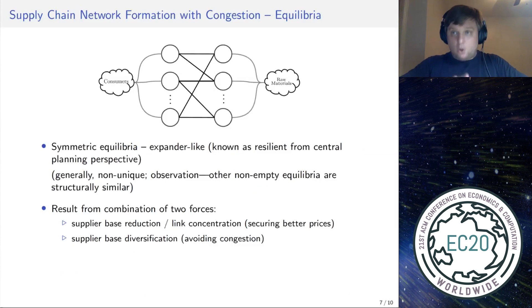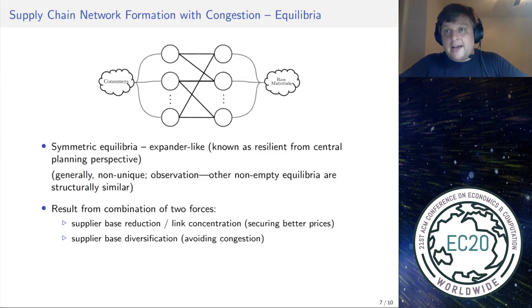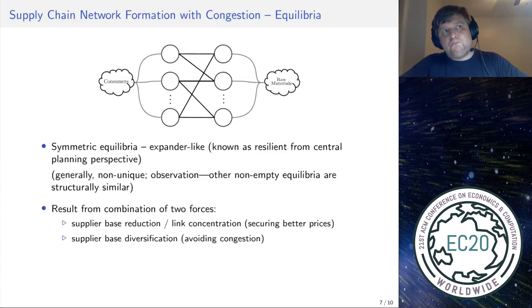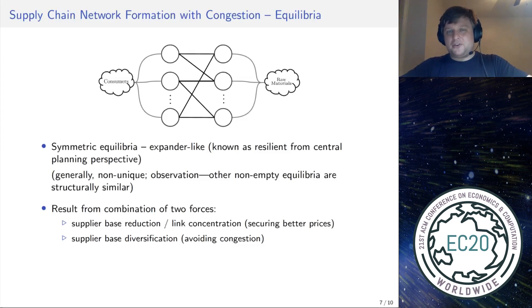In this model with congestion, it is much harder to characterize the whole set of equilibria, but we can focus on symmetric equilibria. It appears that the symmetric equilibria are expander-like. Graph expanders are those sparse yet sufficiently redundant networks that have been shown to be very resilient supply chains from the central planning perspective. Here we see that expander-like networks arise endogenously without any central planning involved. I call them expander-like rather than proper expanders because expanders are defined with respect to a bottleneck — the minimal expansion — and these networks may have a few bottlenecks. If you ignore those few bottlenecks, the rest of the network is an expander, and the difference from a proper expander is small in terms of an appropriately defined graph distance.